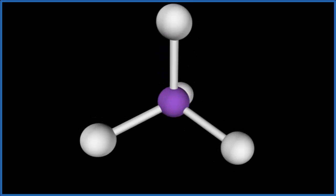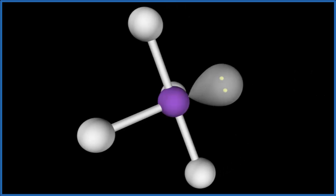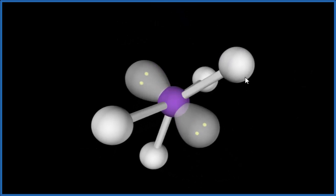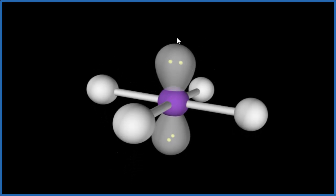But, we have to remember those two lone pairs. So, let's add the lone pairs. One, still spreading out. Two, and what we end up with is something called a square planar molecular geometry.